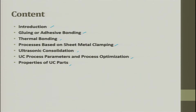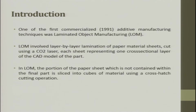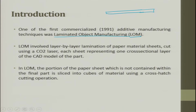One of the first commercialized additive manufacturing techniques was Laminated Object Manufacturing, otherwise called LOM. LOM involves layer-by-layer lamination of a paper material sheet cut using a CO2 laser, each sheet representing one cross-section layer of the CAD model of a part. A single-layer sheet paper laminate is used as one layer.